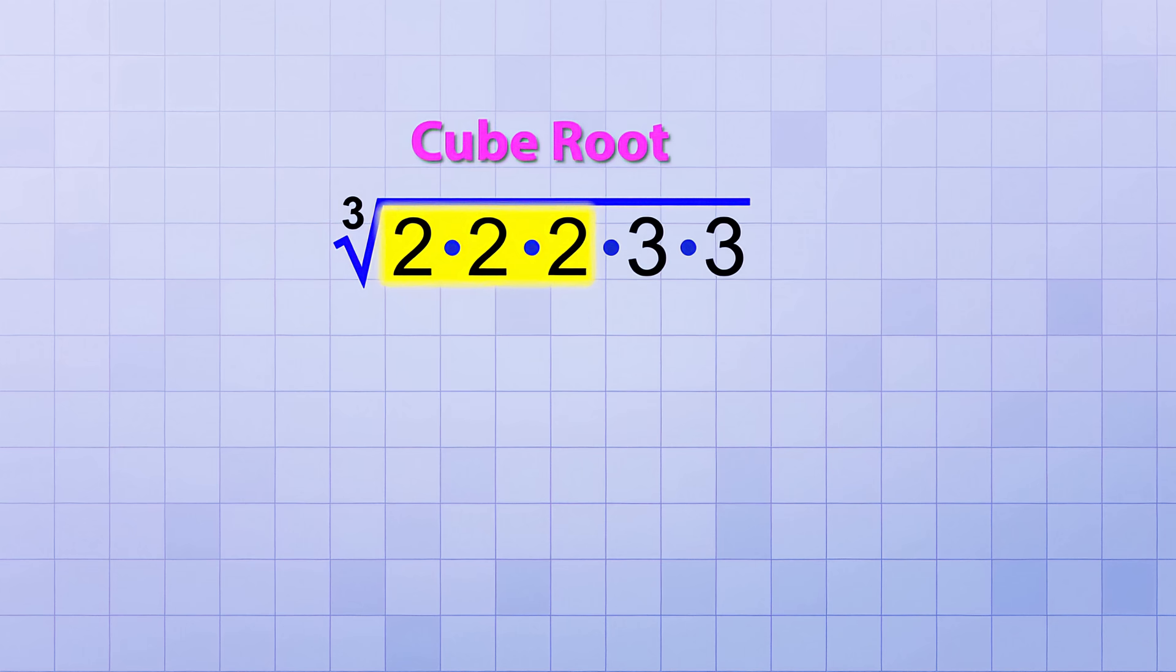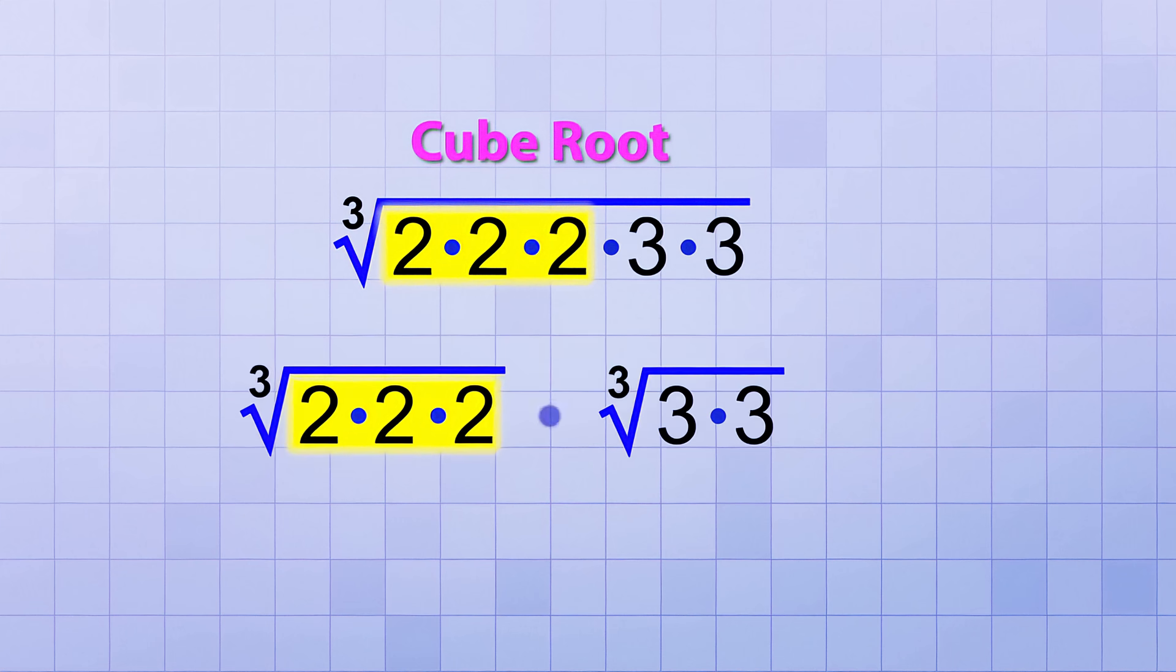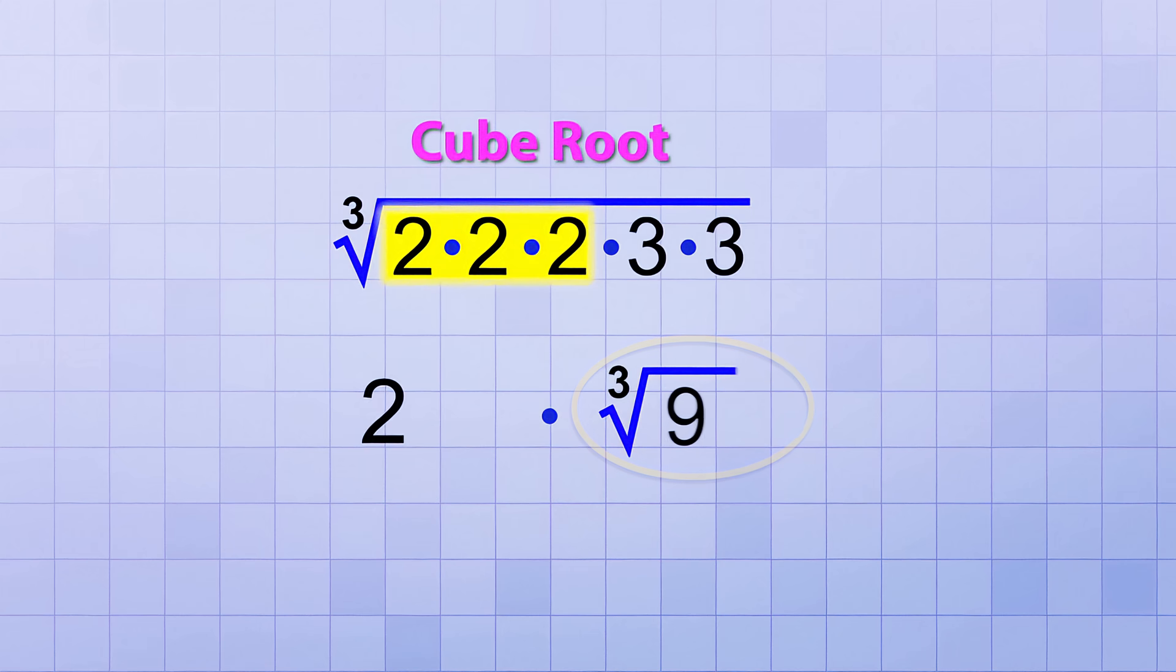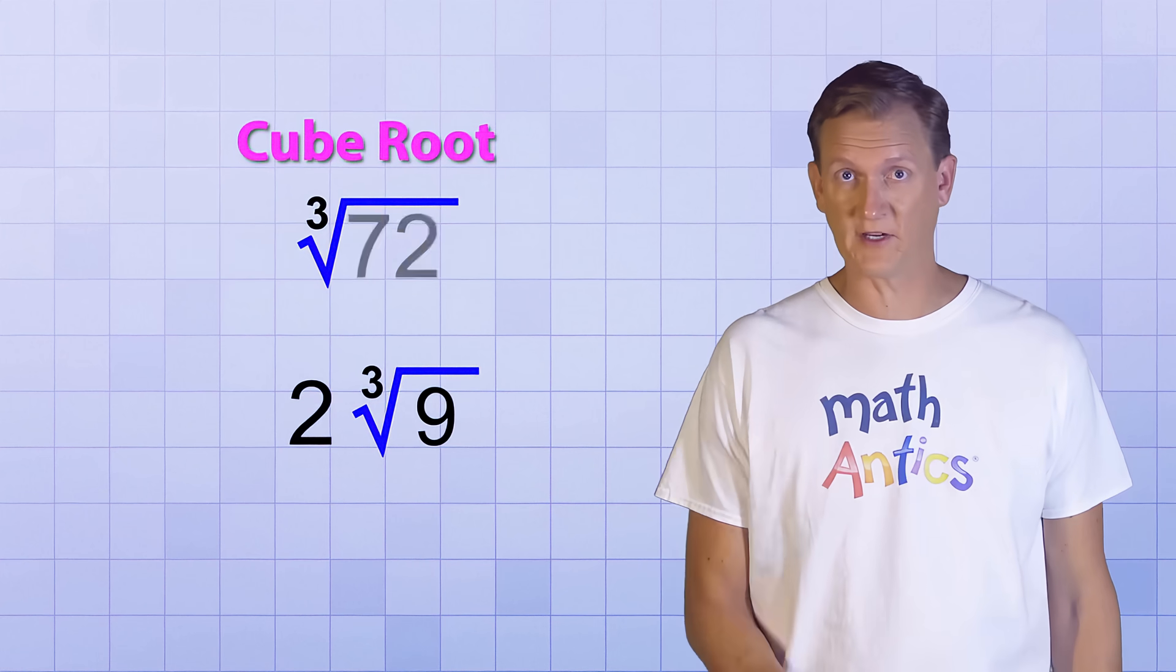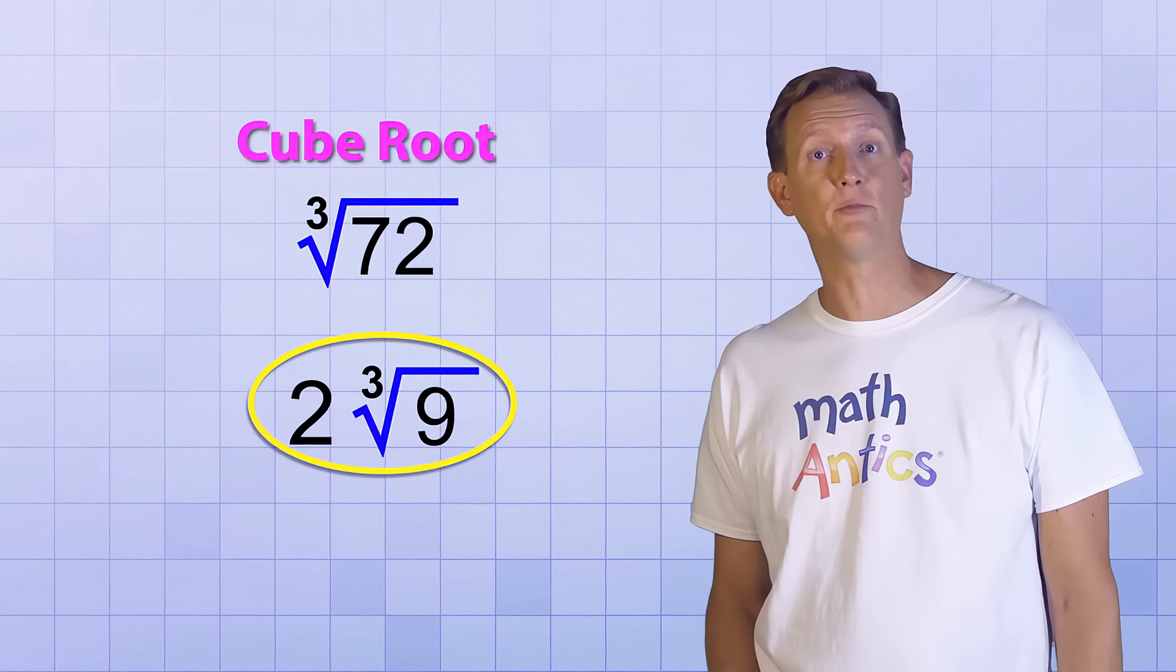Also like before, we can use our rule to break this problem up into the cube root of 2 times 2 times 2 times the cube root of 3 times 3. This first part simplifies to 2. Well, the second part can't be simplified any further, so we just recombine it to the cube root of 9. There, the simplified version of the cube root of 72 is 2 times the cube root of 9.